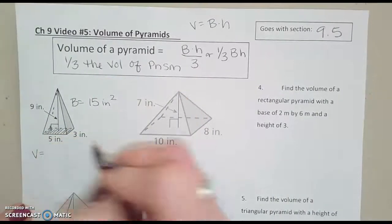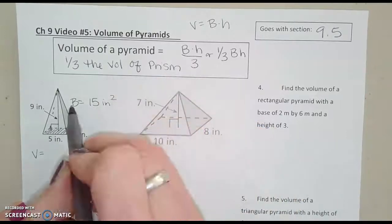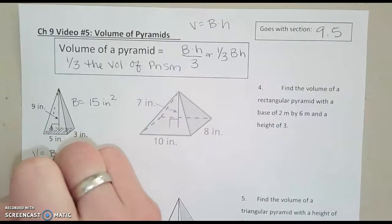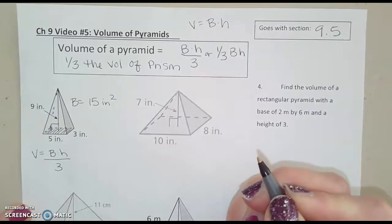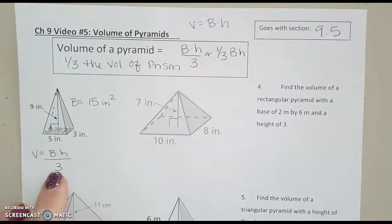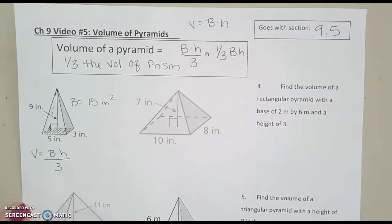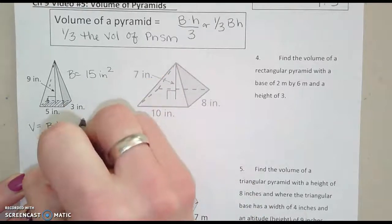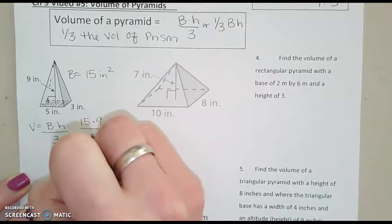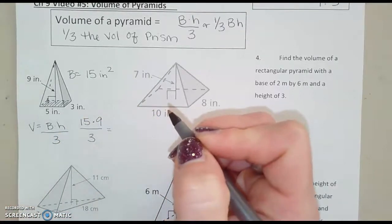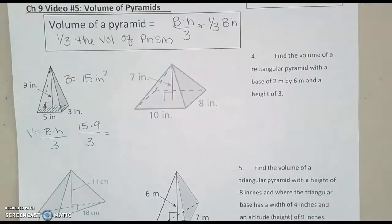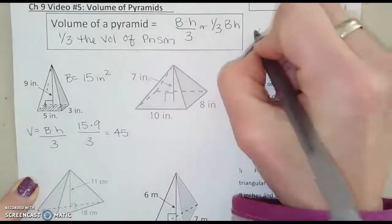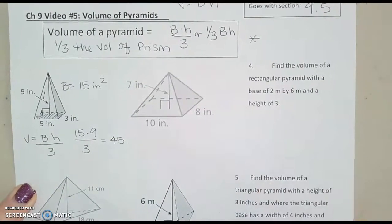So if this was a prism, I would be doing capital B times 9, a height of 9, but it's a pyramid. So I'm going to do capital B times the height, and then divide that answer by 3. So we want to get in the habit of writing this formula down every time for each example, so that we get it stuck in our heads better. Okay, I also want to make a note up here, back with our formula, we need to think about units.